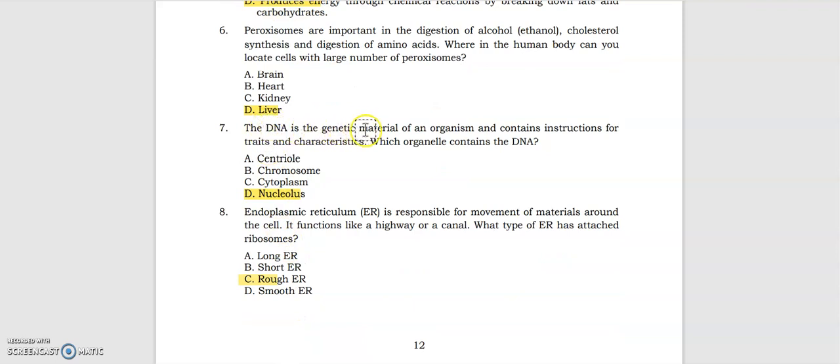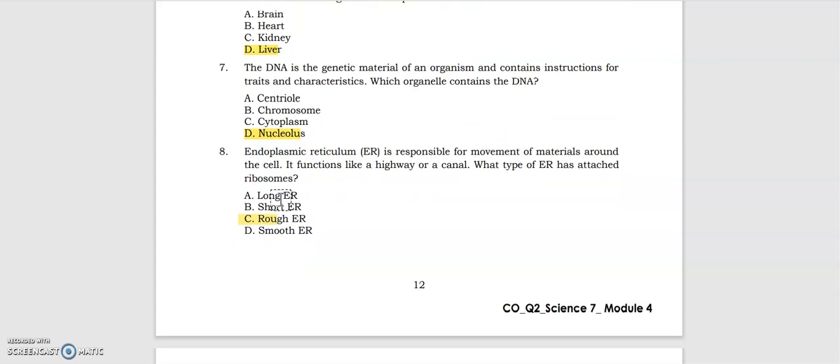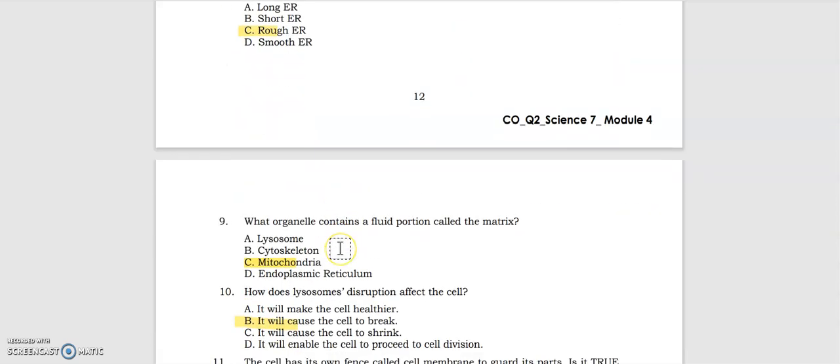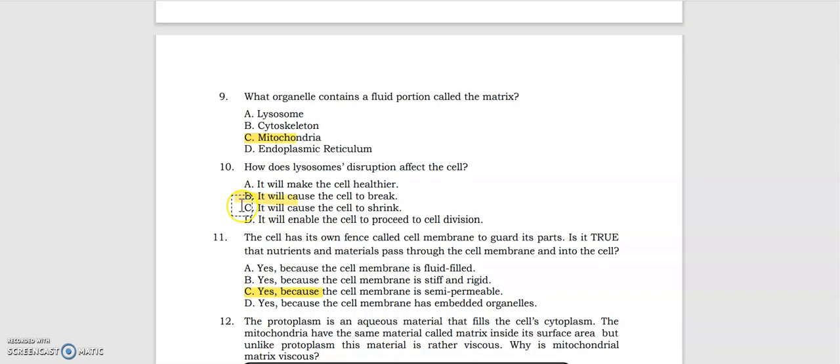Then we have: DNA is the genetic material of an organism and contains instructions for traits and characteristics. Which organelle contains the DNA? Of course the nucleolus that's inside the nucleus. Next, endoplasmic reticulum is responsible for movement of materials around the cell. It functions like a highway or a canal. What type of ER has attached ribosomes? If may attached, rough ER. So for number eight, the answer is rough ER.